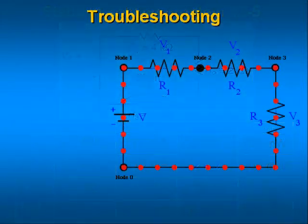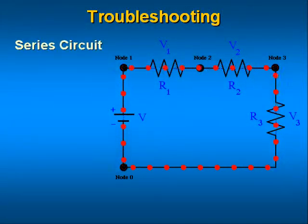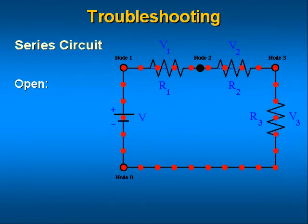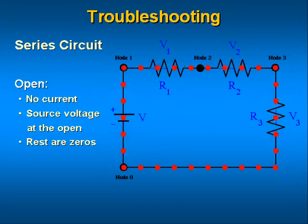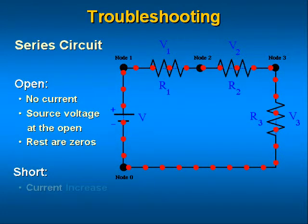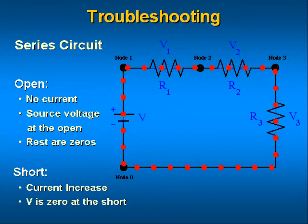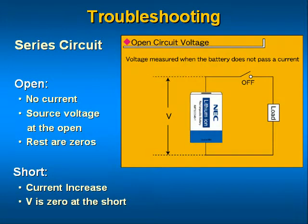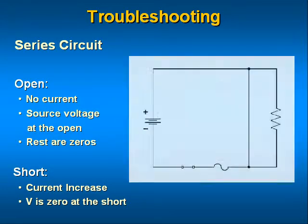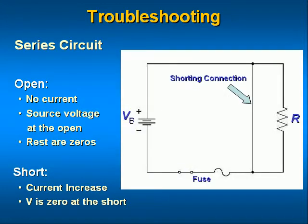Before you can successfully troubleshoot a circuit, you must know how the circuit is supposed to work. In a series circuit, the sum of the voltages across all of the components must equal the source voltage. If you see that all the source voltage appears across only one of the components, then you know there is an open in that circuit, no current is flowing, and the component with the source voltage across it has failed and is open. A short in a series circuit manifests itself as a higher-than-normal current, and the shorted component will have zero volts across it.